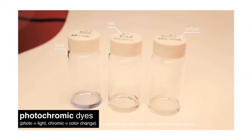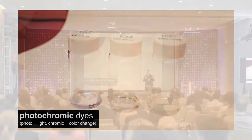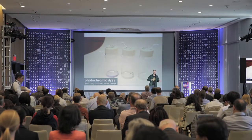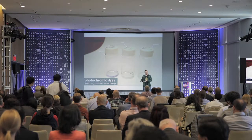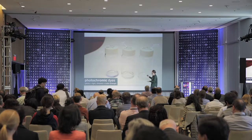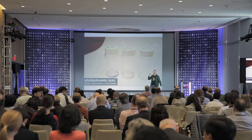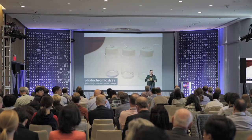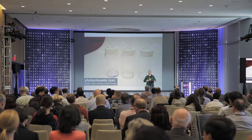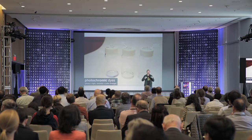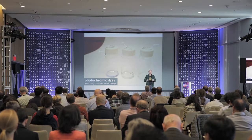The magic behind it is based on photochromic dyes. Photochromic dyes have the property that they have two different states: they can switch between being transparent to being saturated with a certain color. Here, for example, you see three different ones — one is blue, one is red, one is yellow. At the moment it is transparent, but if you activate it with UV light, it actually gets saturated and gets a color.